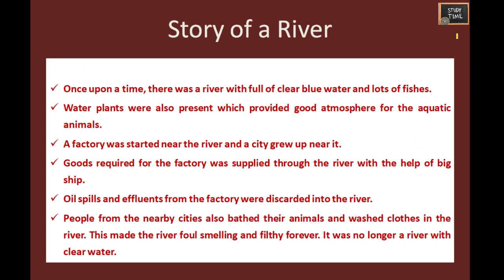I have written a sample for you. Story of a River: Once upon a time there was a river full of clear blue water and lots of fishes. Water plants were also present which provided a good atmosphere for the aquatic animals. A factory was started near the river and a city grew up near it. Goods required for the factory were supplied through the river with the help of big ships. Oil spills and effluents from the factory were discarded into the river. People from the nearby cities also bathed their animals and washed clothes in the river. This made the river foul-smelling and filthy. It was no longer a river with clear water.